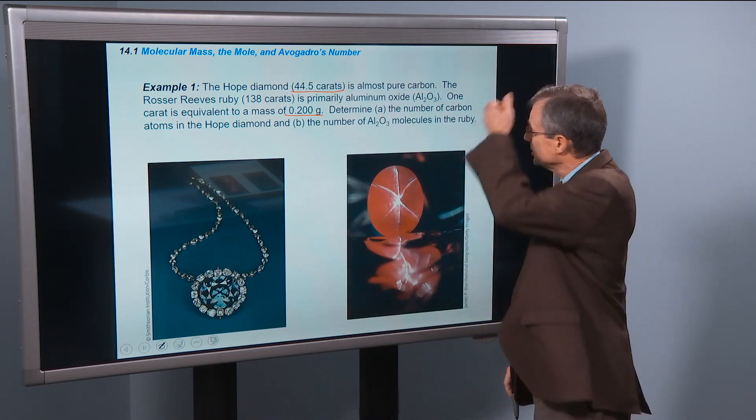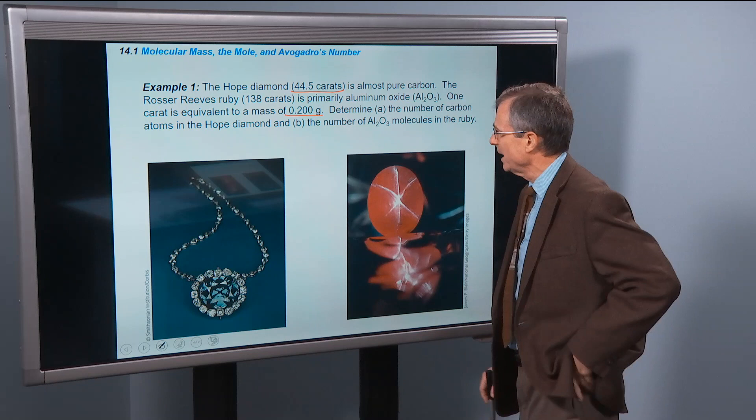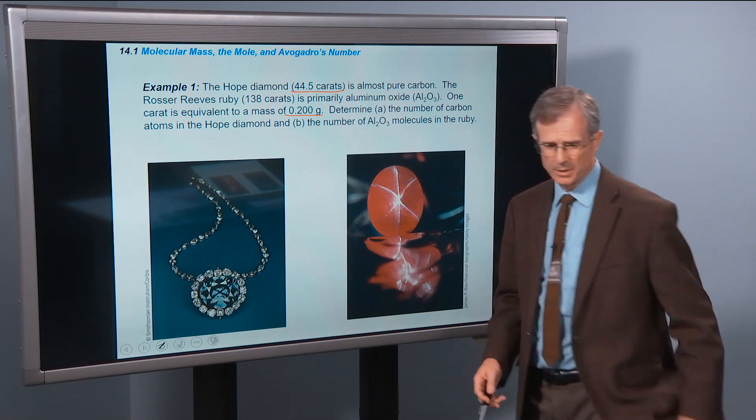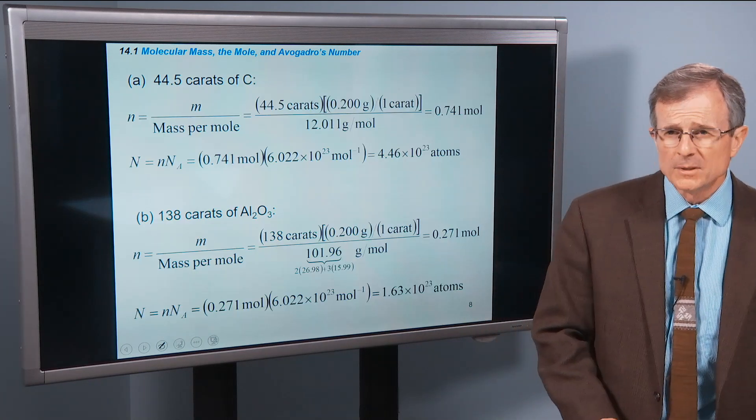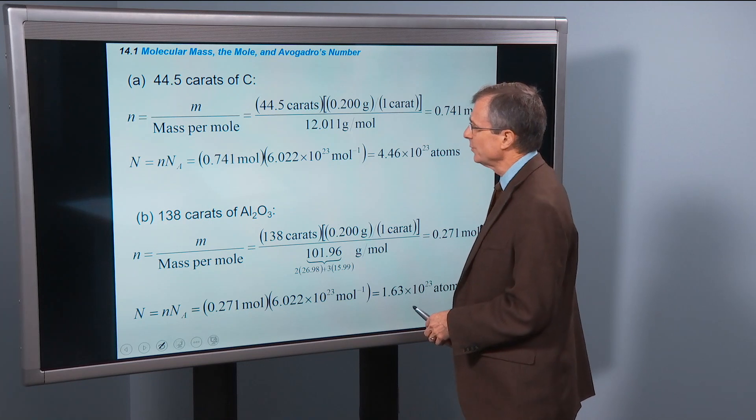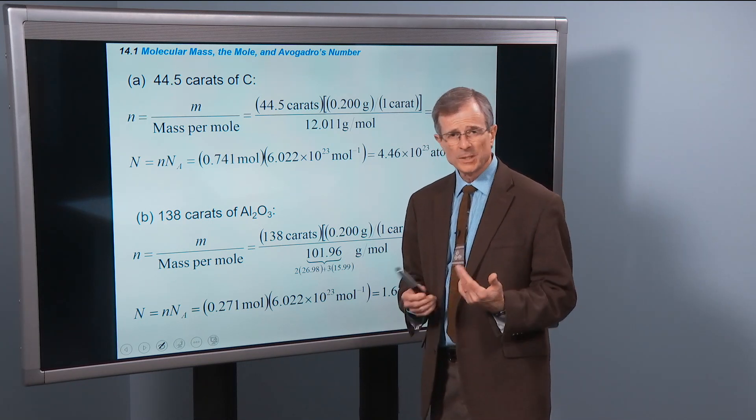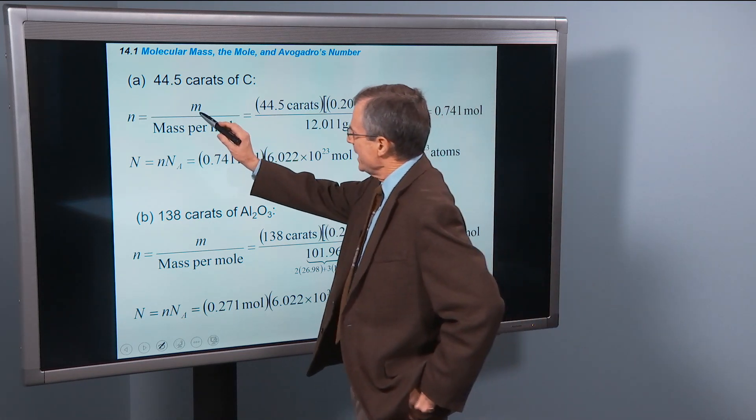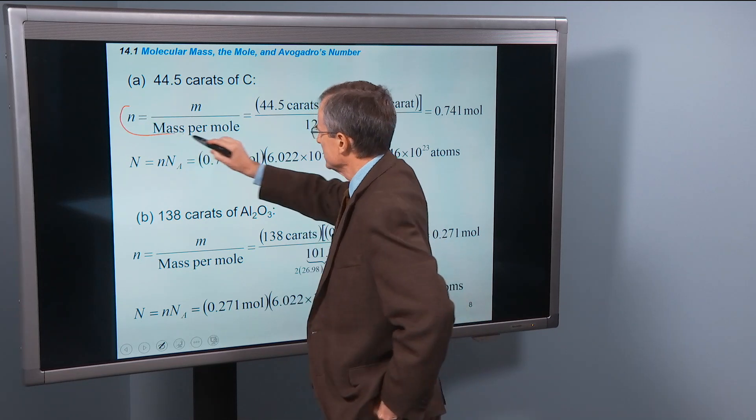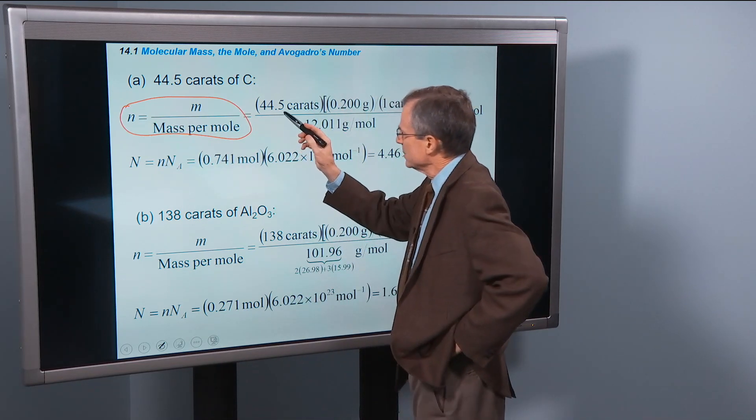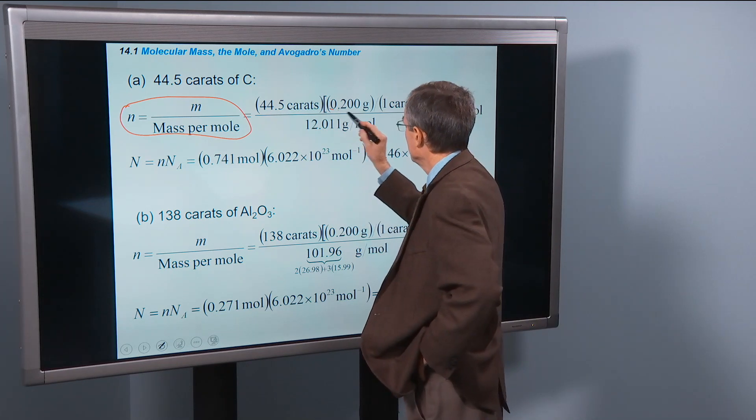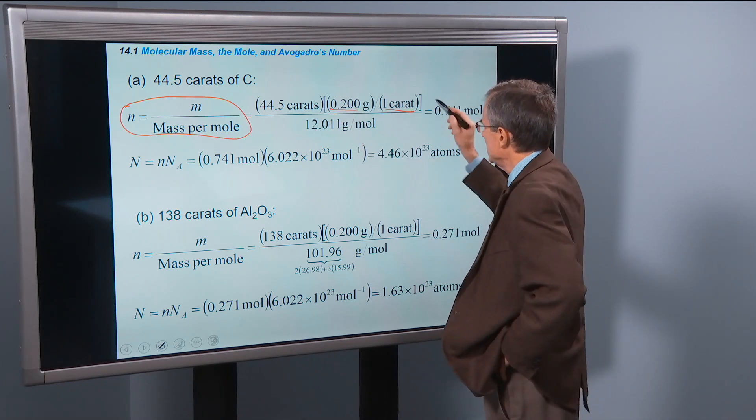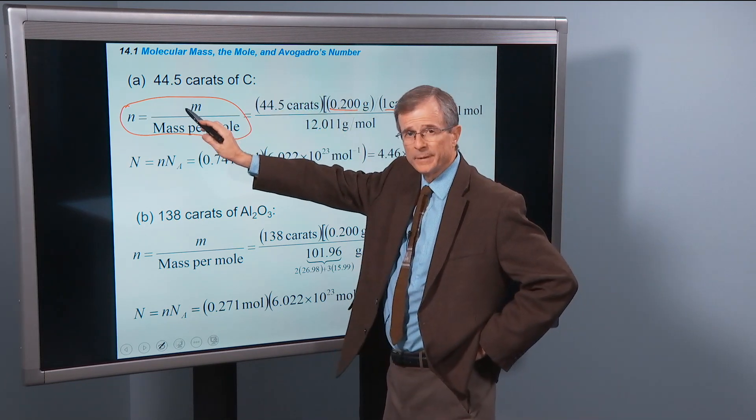The Hope Diamond is a big one. One carat is equivalent to a mass of 0.2 grams. We're asked to determine the number of carbon atoms in the Hope Diamond and the number of aluminum oxide molecules in the ruby. Let's do it first for diamond. Diamond is mostly carbon, so let's consider it to be all carbon. For the mass, this is the equation that we just derived.